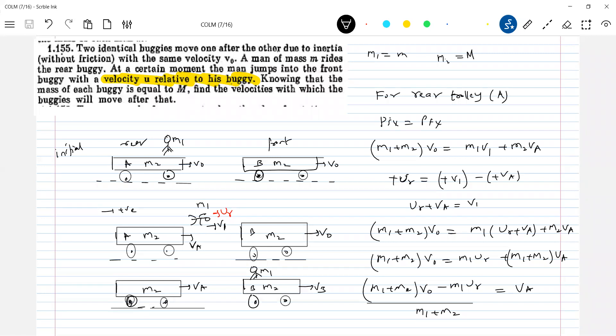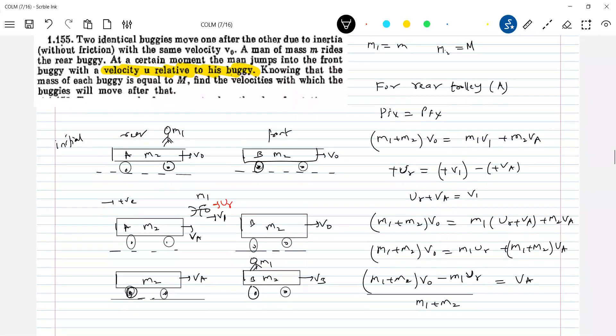Okay, this much is what? We have this one. Now come for the next part of the problem. You will land. So the person is coming from the rear buggy and he will land onto the front buggy.